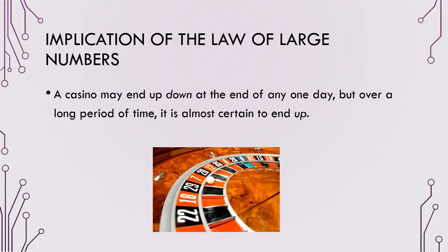This is why casinos may end up down at the end of any one day, but over a long period of time they will come out ahead. The highest-percentage gambling game is roulette at roughly 46–48%. You bet on red or black with one green spot, giving you about a 46–48% chance of winning. But the longer you play, the more you will win 48% of the time and the house will win 52% of the time — meaning in the end, the house wins.